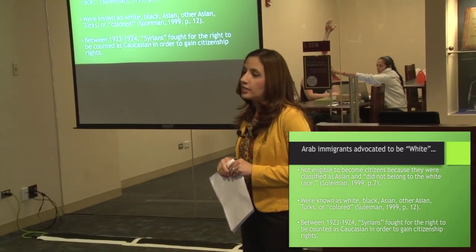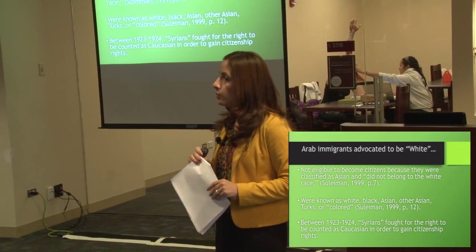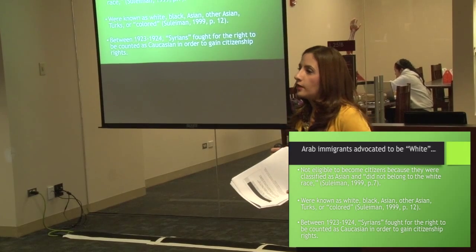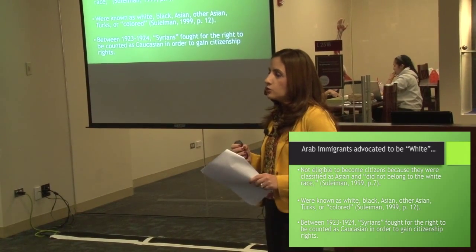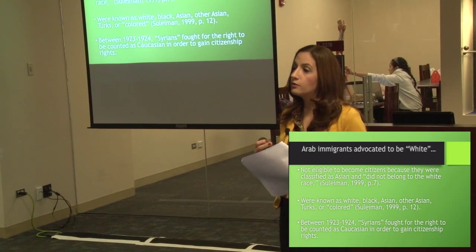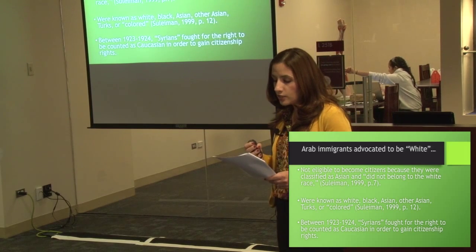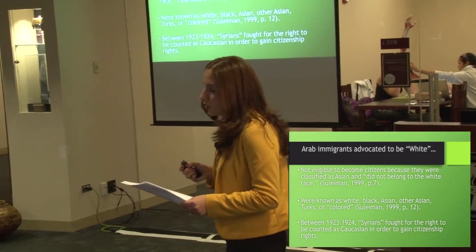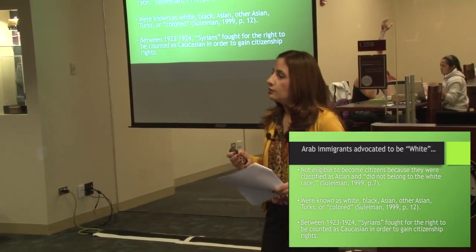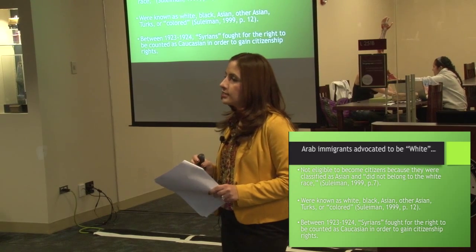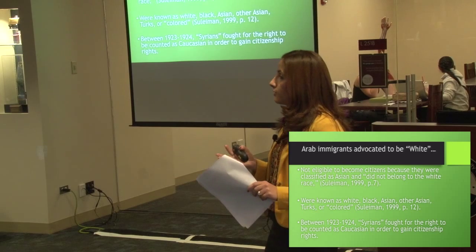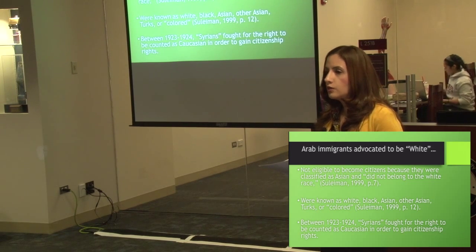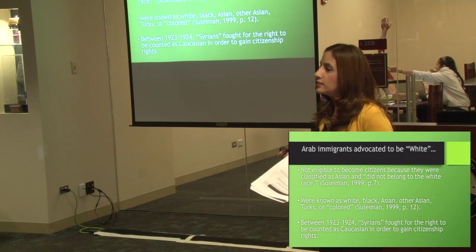Once upon a time, some of the first Arabs that came to this country actually advocated to be white. At a time in history when very few people had eligibility to become citizens, Arabs wanted that right as well, so they fought to be counted as white. Many times they were considered Asian, sometimes white, sometimes black, or even colored. They knew that in order to gain citizenship rights they would have to be counted as white. So around 1923–1924, Syrians from Greater Syria — modern-day Lebanon, Syria, Palestine, and Jordan — fought to be counted as Caucasian in order to become citizens.